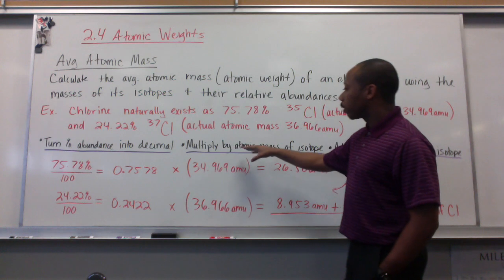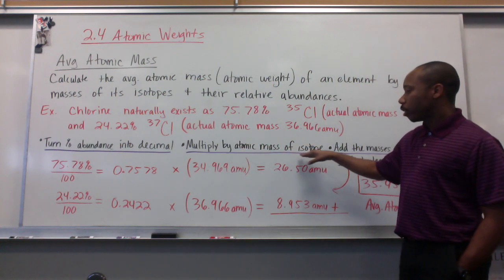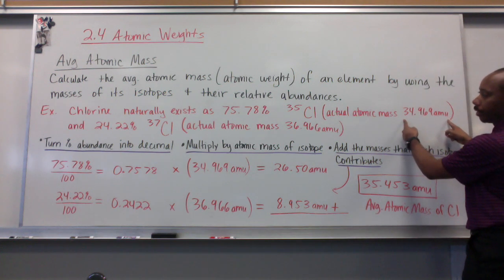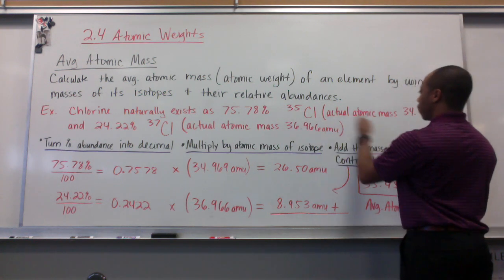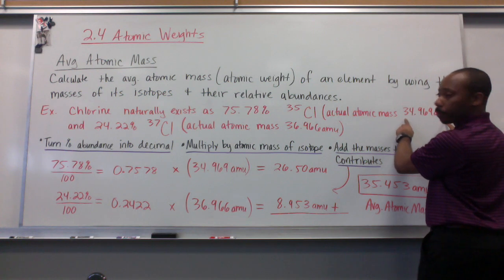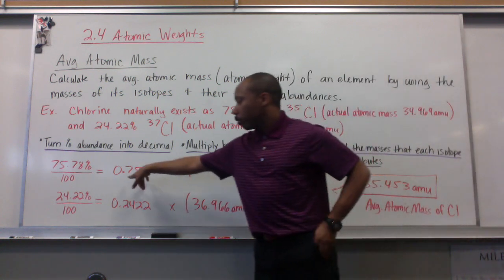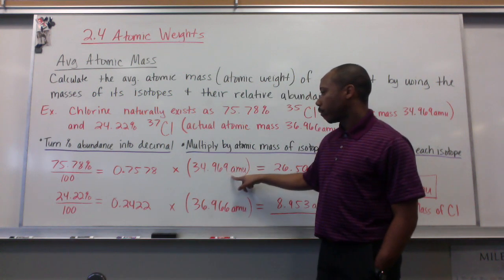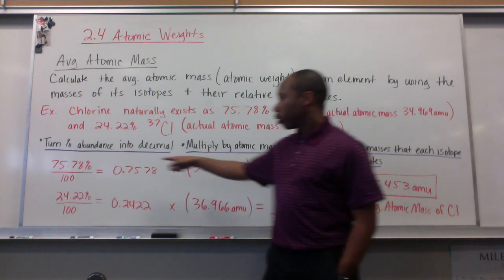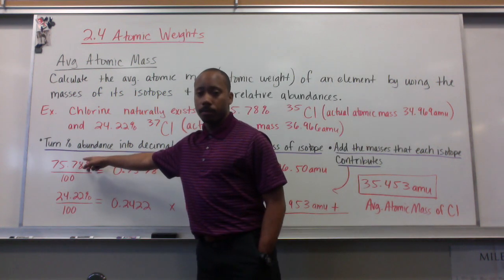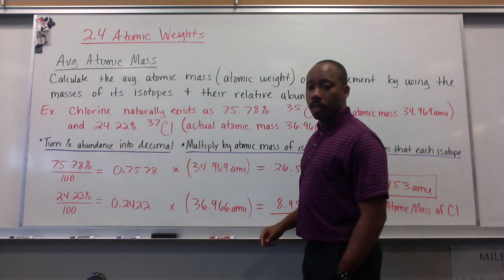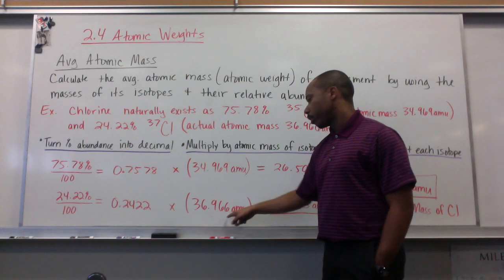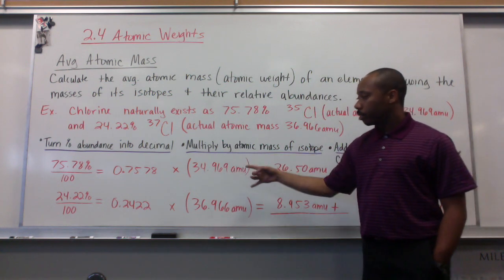Next step is multiply by the atomic mass of the isotope. The atomic mass is the entire number here, not the rounded number, not the mass number, but the decimal form number. So we take this percent abundance as a decimal and multiply it times the atomic mass of chlorine-35. And then the same for chlorine-37's percent abundance. We multiply these two out.